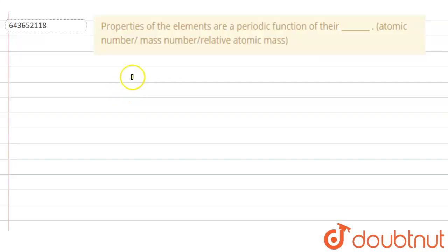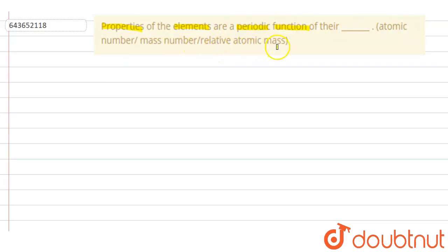Hello everyone, let us solve this question. The question says that properties of the elements are a periodic function of their dash — atomic mass, mass number or relative atomic mass. So in this question, we have to fill in the blank.